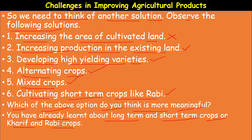Kharif crops are seasonal rainy season crops sown around the month of June and harvested around October. Examples of Kharif crops include paddy, maize, cotton, pigeon pea, black gram, green gram, soya beans, and sugarcane — these are all rain-dependent crops. Depending upon the nature of the soil, we have to select the crop suited to the particular season.